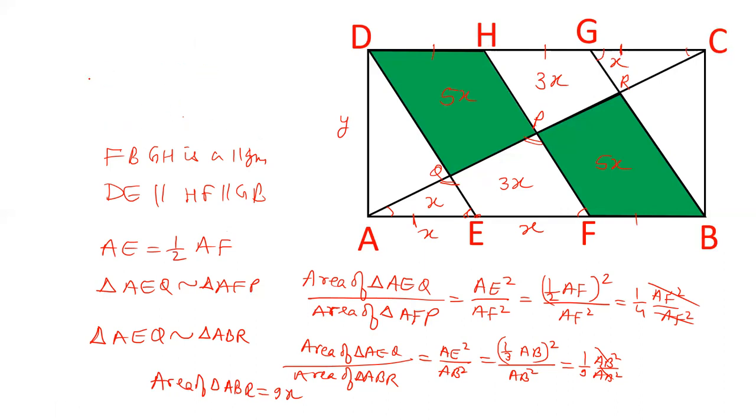So that we know what will be the area of this leftover part. Area of AED is half of EFHD. And area of EFHD is equal to x into y. This triangle is half of EFHD. And therefore EFHD is 3 plus 5, 8x.